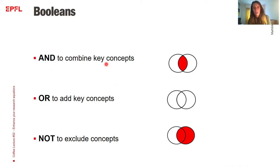AND is to combine two key concepts. So it means that you are only interested in documents that have the two concepts. You want to have a document that is about French fries and ketchup, but you are not interested if it's only about French fries or only about ketchup.